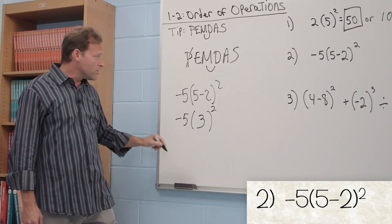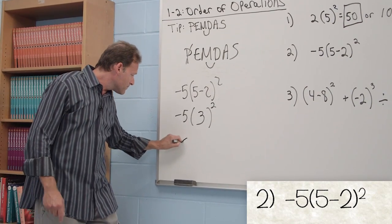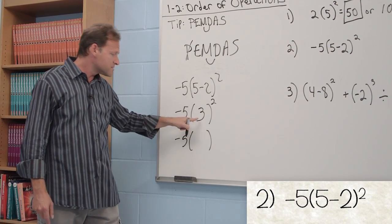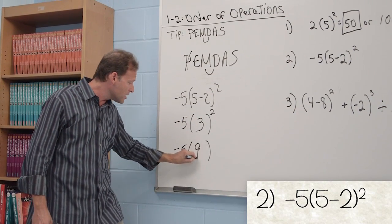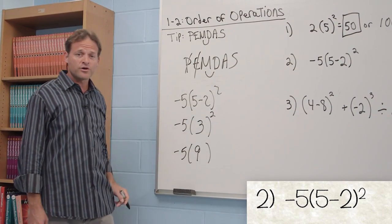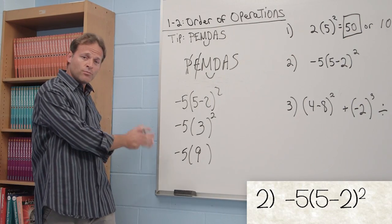Now we go to exponents. Negative 5 times 3 squared. Remember 3 squared means 3 times 3, which is 9. Exponents are done. The only thing left to do is multiply.